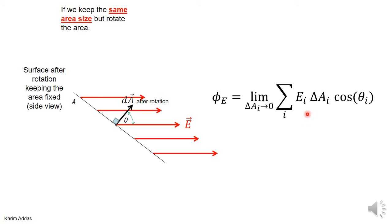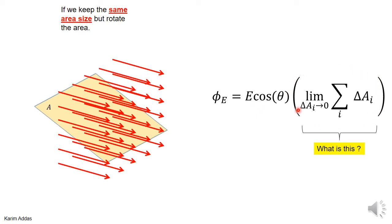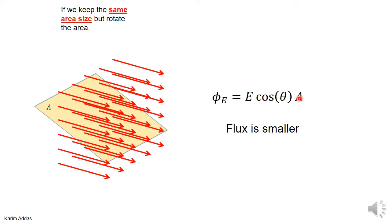Now, E dotted into dA is just E times the area element times cosine of the angle between them. Since the electric field is uniform, E is a constant. The angle theta between the electric field and the area vector is the same for every element of area when the surface is inclined, so cosine theta is also a constant. That means we can take both E and cosine theta outside the summation, leaving us with E cosine theta times the sum of all area elements.